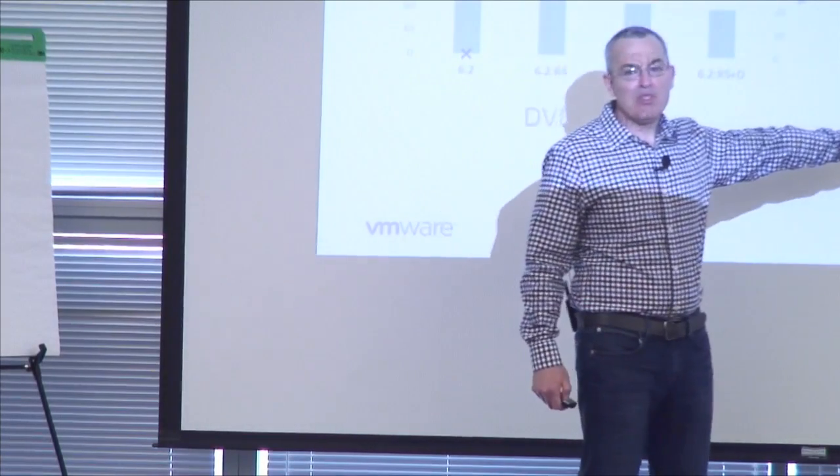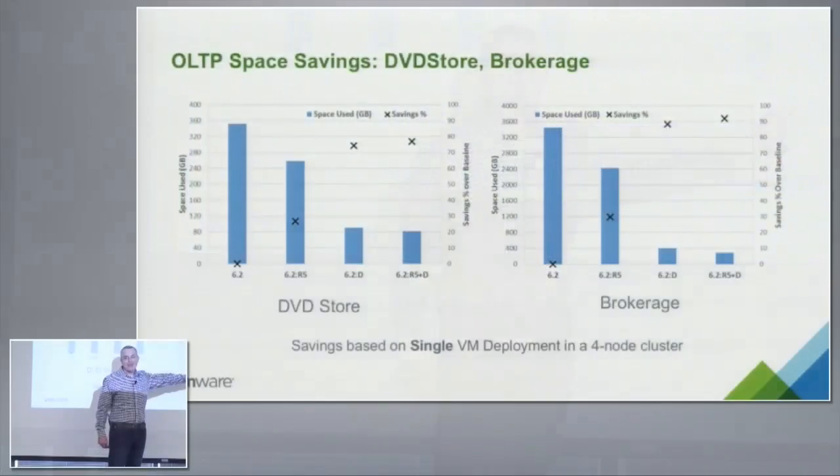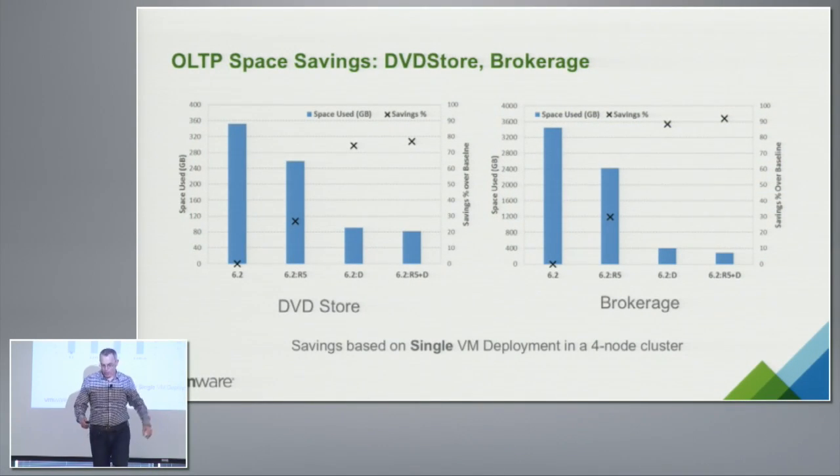On space savings: this workload deduplicates about 75%. This is actually a more realistic dataset — the TPC toolkit dataset is quite deduplicatable.